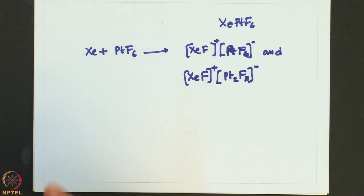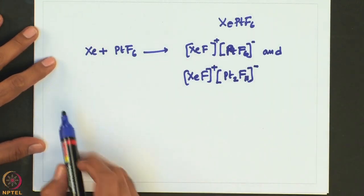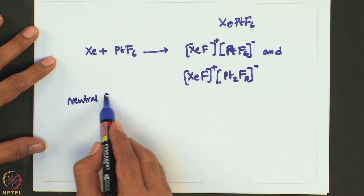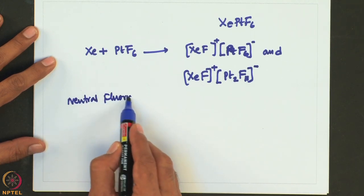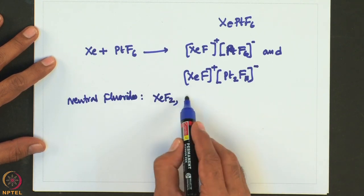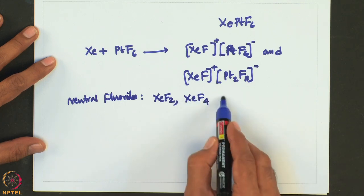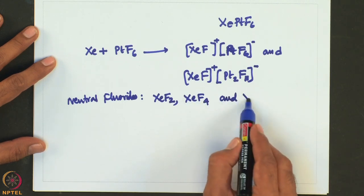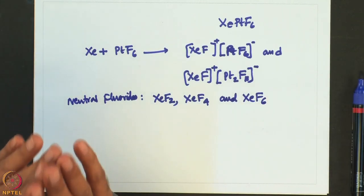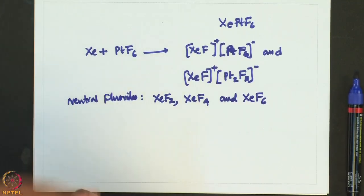Xenon forms three neutral fluorides: xenon difluoride (XeF2), xenon tetrafluoride (XeF4), and xenon hexafluoride (XeF6). These are formed by the reaction of fluorine and xenon under different reaction conditions. The simplest method involves exposing a fluorine–xenon mixture in a dry glass bulb to sunlight.